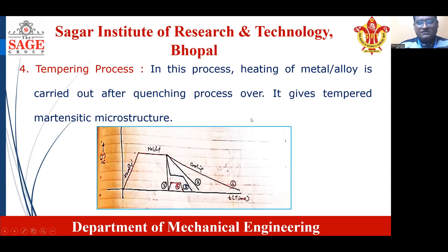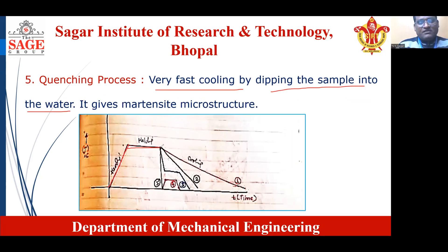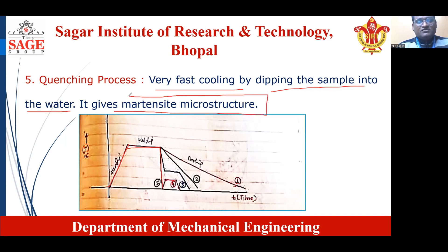The last process is known as the quenching process, also known as the martempering process. In this process, the cooling is carried out very fast — by dipping the sample or component or alloy into water. Looking at the diagram: stage one is heating, then stage two is holding. After completing stage two, the component or alloy is dipped into water and very fast cooling is carried out. This process gives the martensite microstructure, which shows very high hardness of the material. These are the bulk heat treatment processes we have studied.